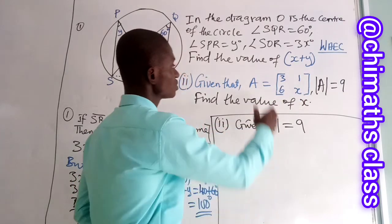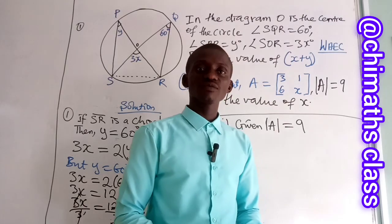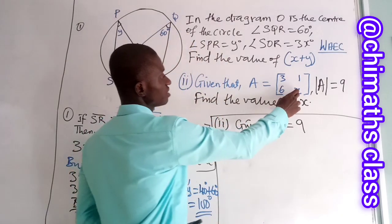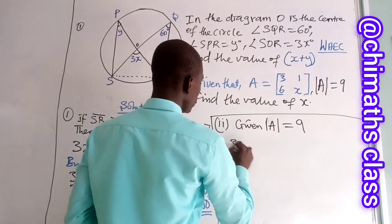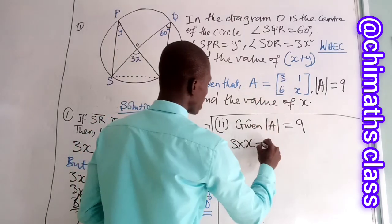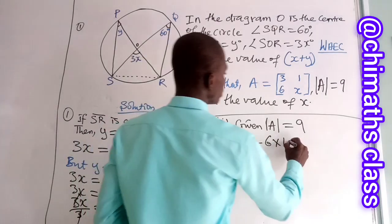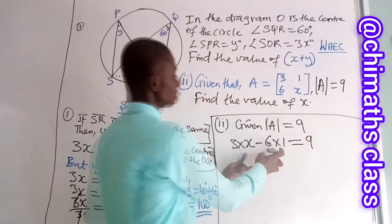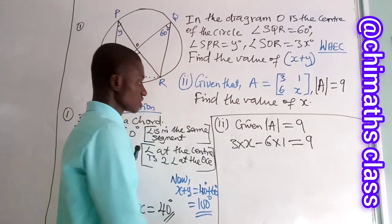It is the product of the leading diagonal minus the product of the lagging diagonal. This is the leading diagonal, and this is the lagging diagonal. So we have 3 multiplied by X, 3 times X, minus 6 multiplied by Y. So we can equate it to 9, with determinant 9, and equate it to 9.